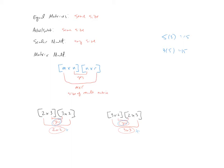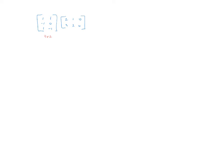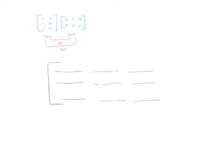Let's go ahead and multiply these two matrices. The size of the first matrix is a three by two and the size of the second matrix is a two by three. So yes, we can multiply them and we'll end up with a three by three matrix. I'd recommend drawing out your three by three matrix to keep track of everything.